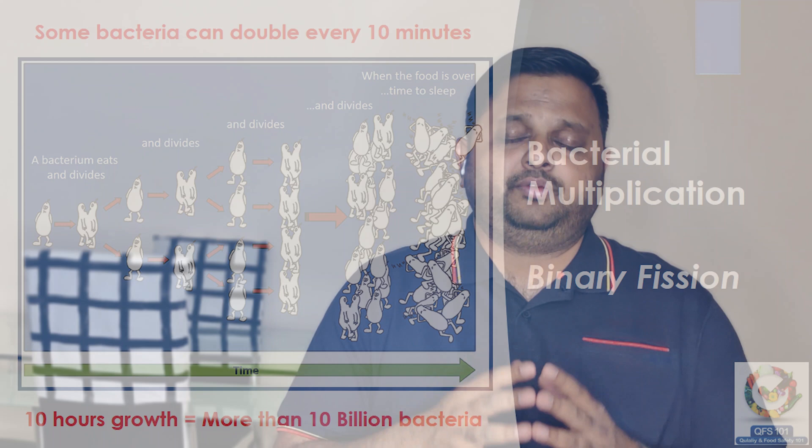One of the fastest growing bacteria is E. coli, which takes 10 to 12 minutes, or sometimes 15 minutes, to double itself if all the resources are available and in good condition.